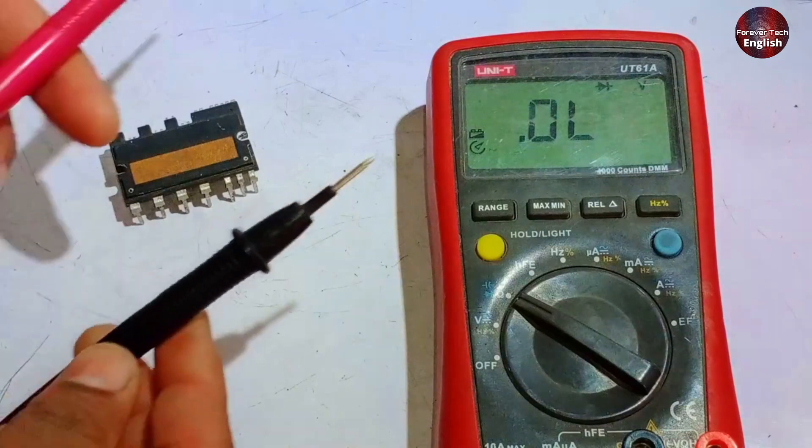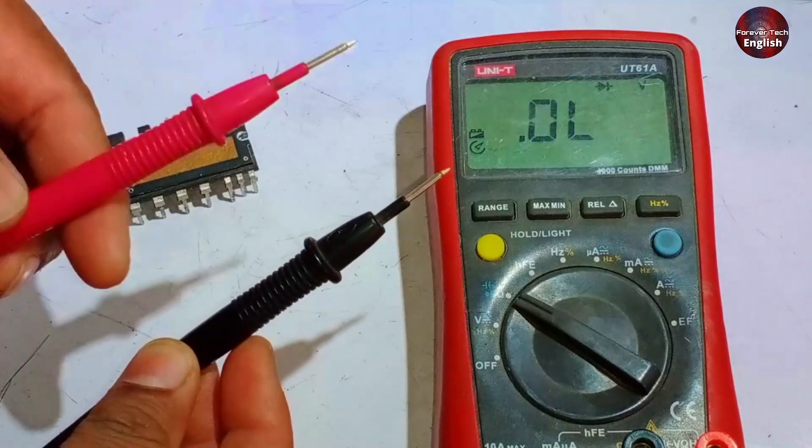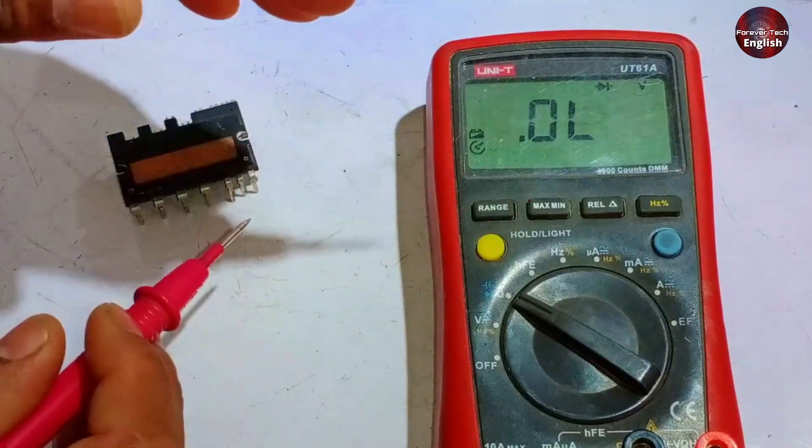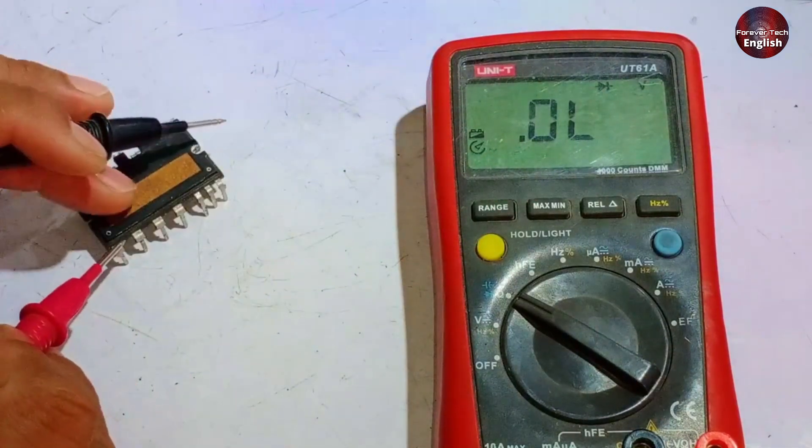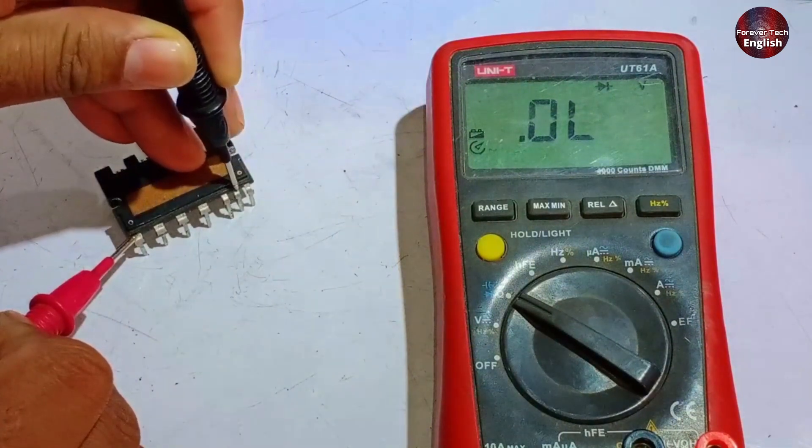Now, let's perform the second test. In the second test, we'll swap the positions of the positive and negative probes. The positive will go to pin 27, and the negative will go to pin 21. So, when we connect the positive to pin 27 and the next point to pin 21, no value should be displayed here.